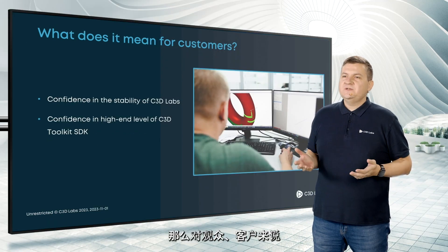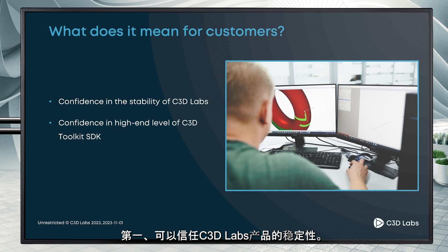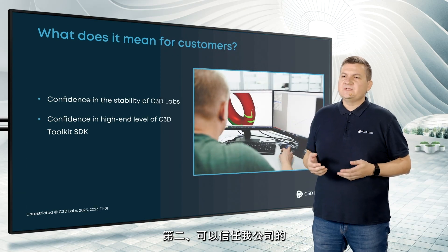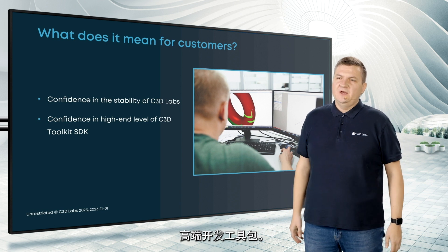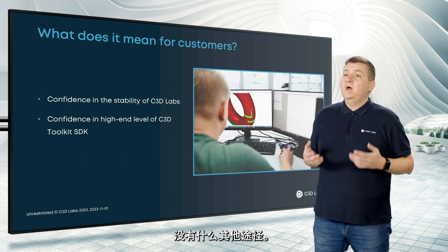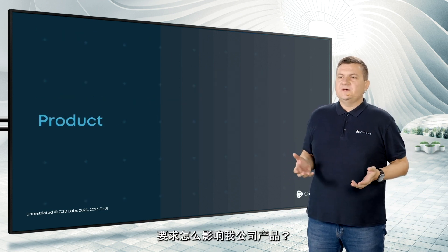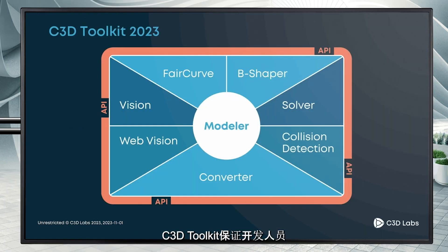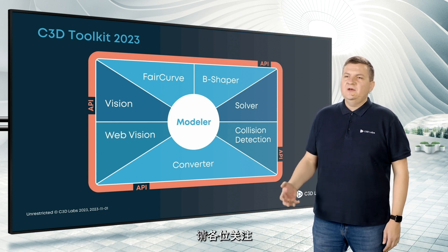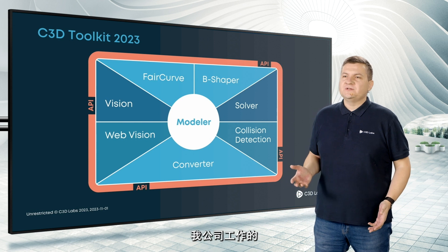But what does it mean for you, for our customers? First, confidence in the stability of C3D Labs — today we have around 60 customers and this number is growing. Second, confidence in the high-end level of C3D Toolkit SDK. We don't have options; we must meet all the requirements from all our customers. You know that C3D Toolkit is a complete SDK for engineering software developers. My colleagues will tell you in detail about the novelties of all our components, and I want to pay your attention to several new directions in our work.